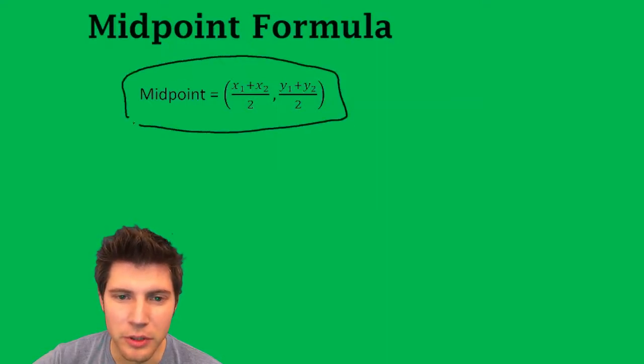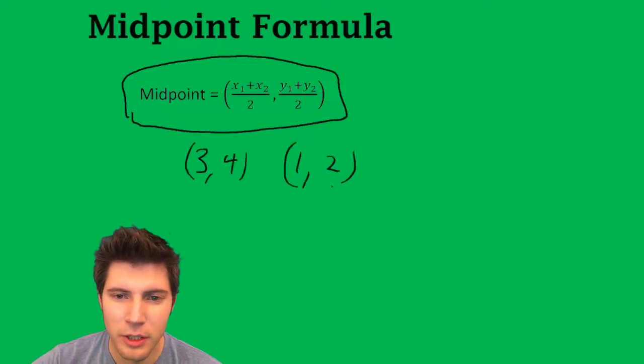So they could give you two points, say 3, 4, and 1, 2. And what you do is you call this x1, this y1, this x2, this y2.